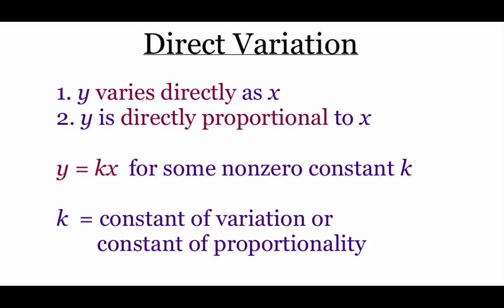The first type of variation is direct variation. There are two key things to look for. It might say y varies directly as x, or y is directly proportional to x. We just have to understand that those mean the same thing. When writing a direct variation equation, it looks like y equals k times x. That k is called the constant of variation or the constant of proportionality.